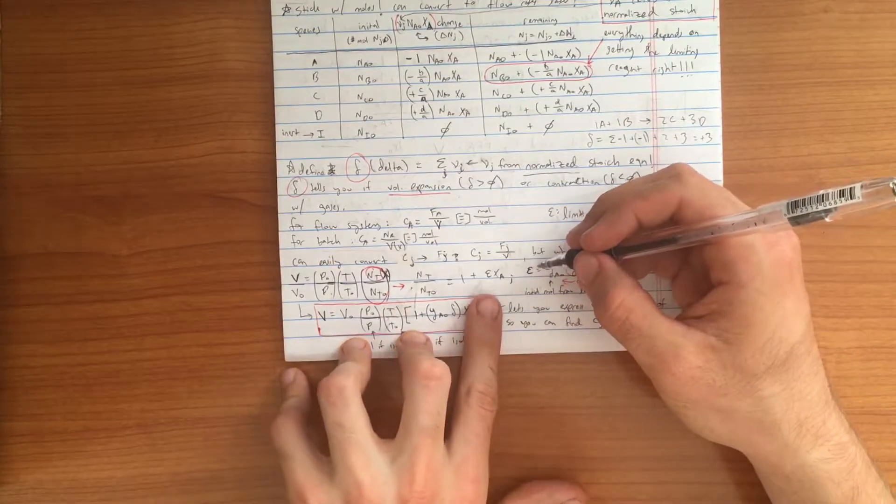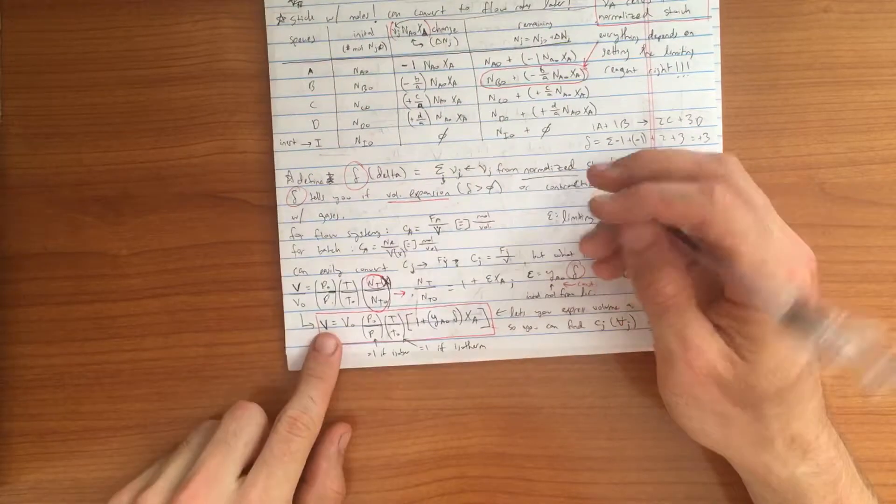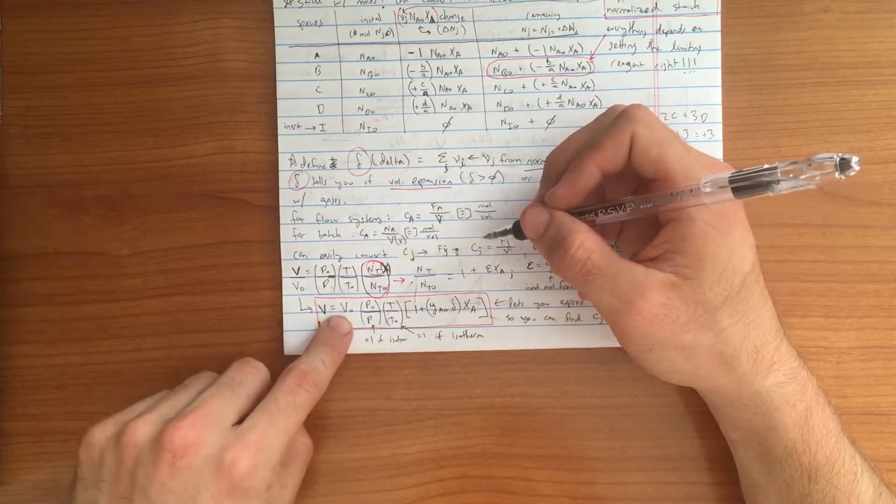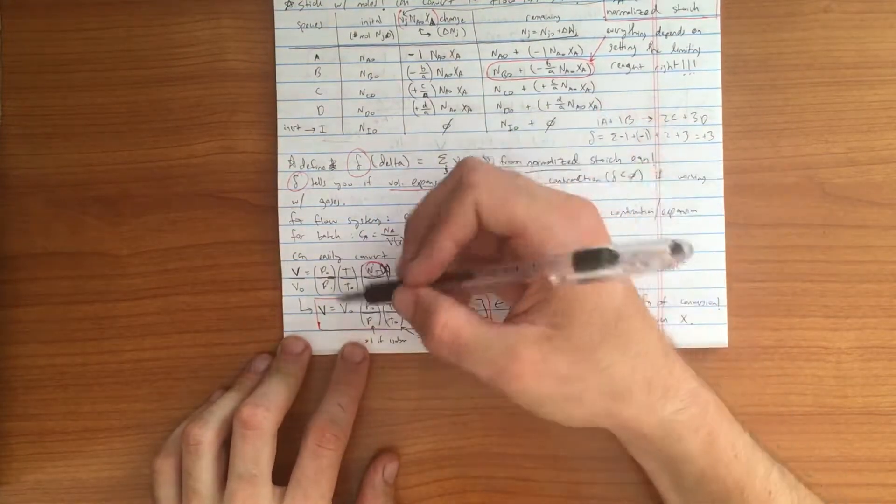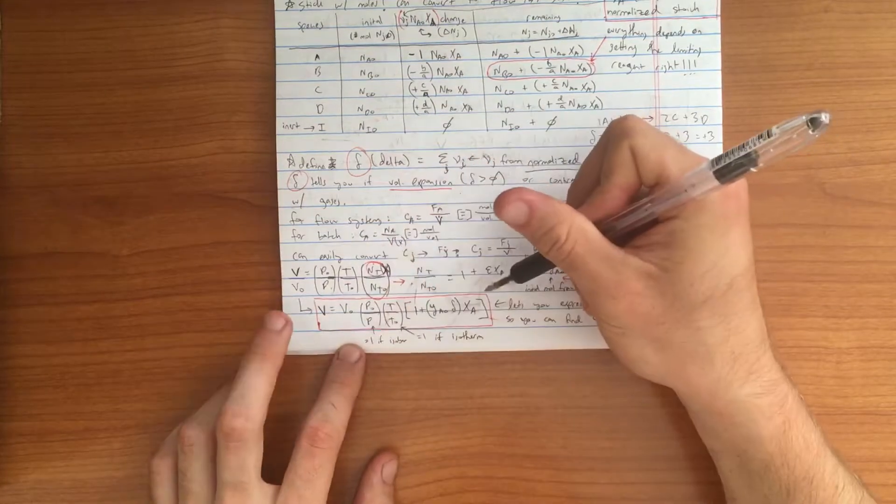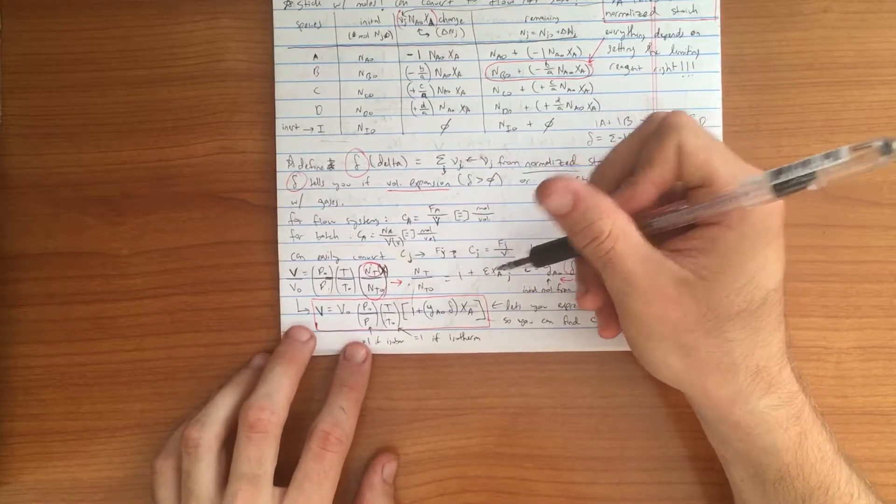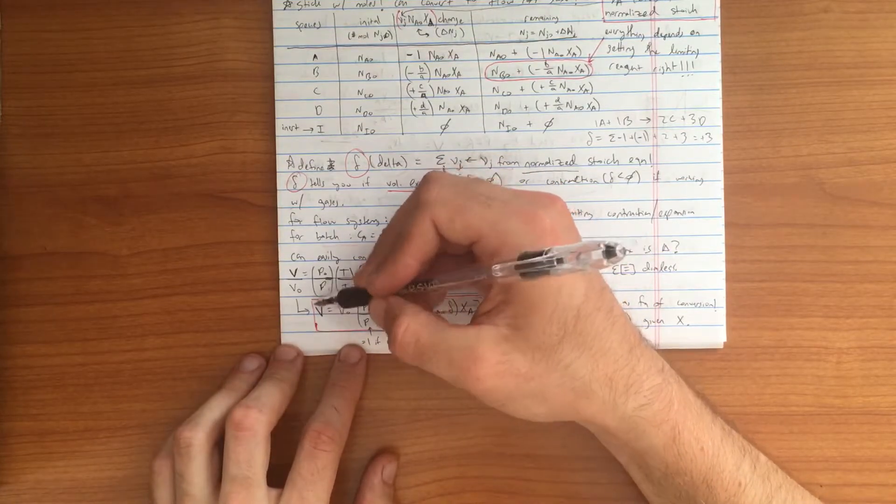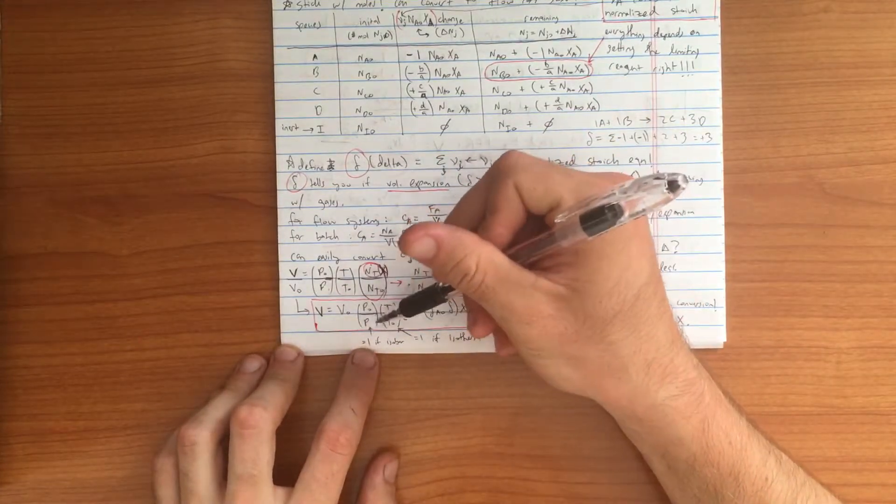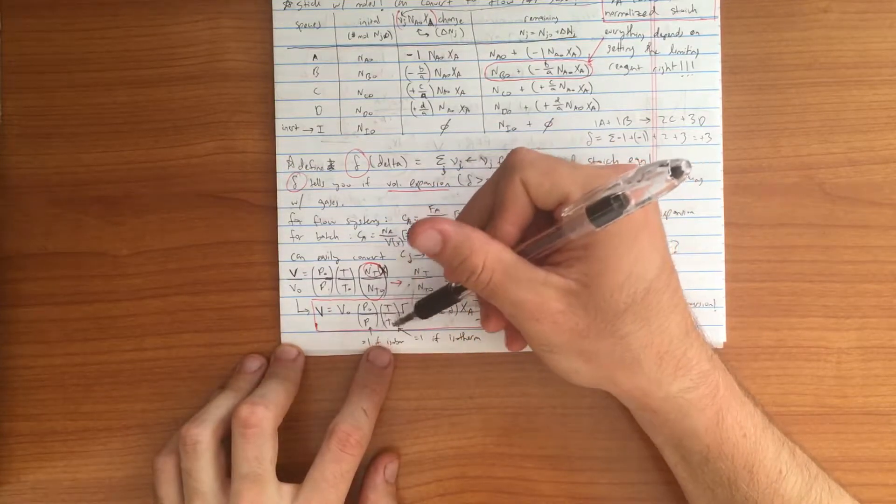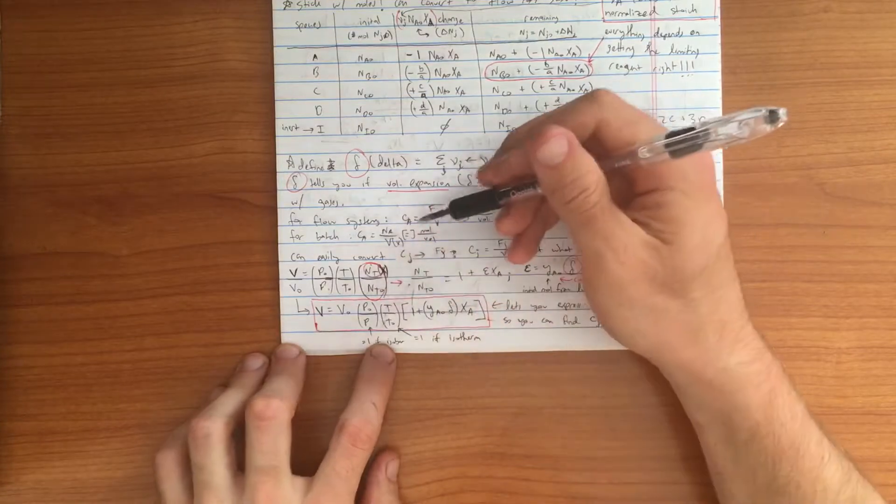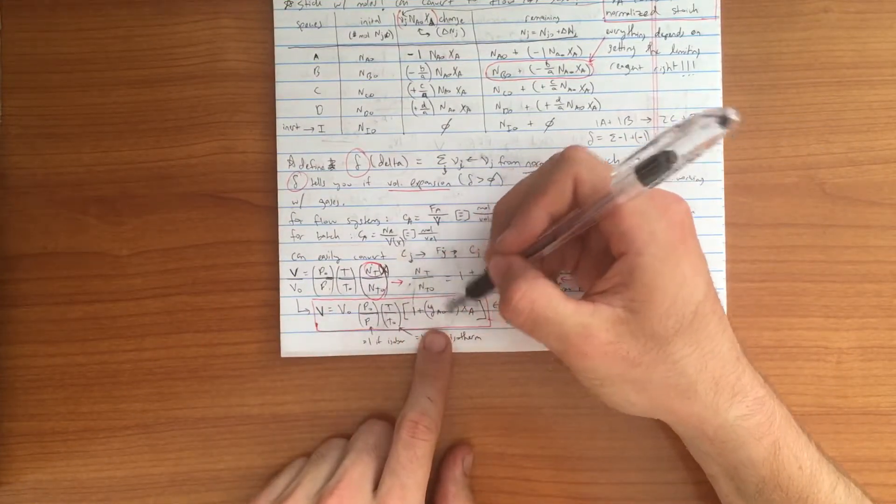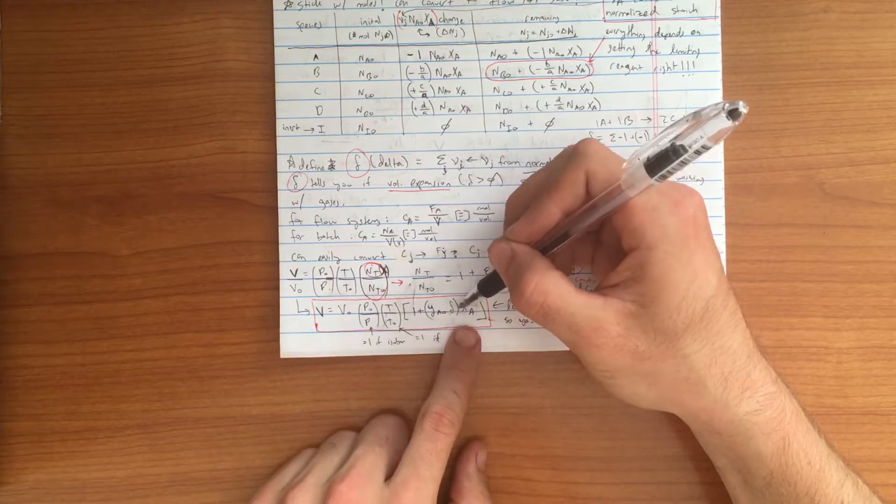From this relationship here, we can solve for our volume as a function of x sub a, and when we do that, we get this relationship. V naught can be anything, you're usually given it, or you can solve for it. P naught over P will equal one if it's an isobar, and typically in chemical engineering problems, it will be an isobar, because if it's not an isobar, it's likely to be an isochore, in which case your volume will equal v naught, and all this extra stuff is just pointless, so this is very typically equal to one. T over t naught would take into account if this was not an isotherm, but it is, so that term is also equal to one, but I'm leaving it here so we have the overall generic equation. Then we multiply these other terms by one plus the initial molar ratio of your limiting reagent times delta value times x sub a.